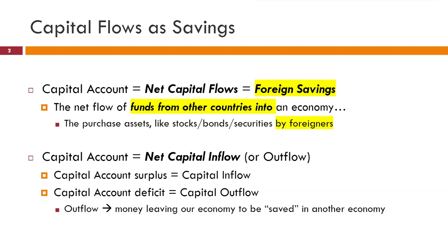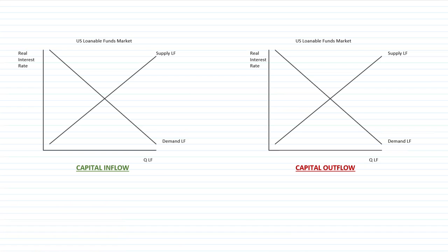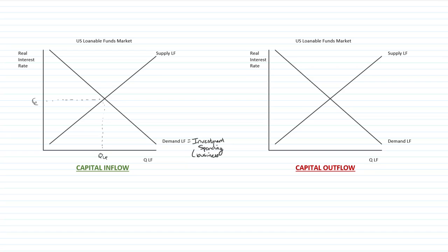Capital outflow is money leaving our economy to be saved in another economy — an American taking their savings and making that money available to a foreign business rather than an American one. To graph this, we look at our loanable funds market. The loanable funds market measures savings versus investment spending. We have quantity of loanable funds (QLF) and the real interest rate (RE). The demand for loanable funds is overwhelmingly investment spending by businesses, and the supply of loanable funds is overwhelmingly savings.